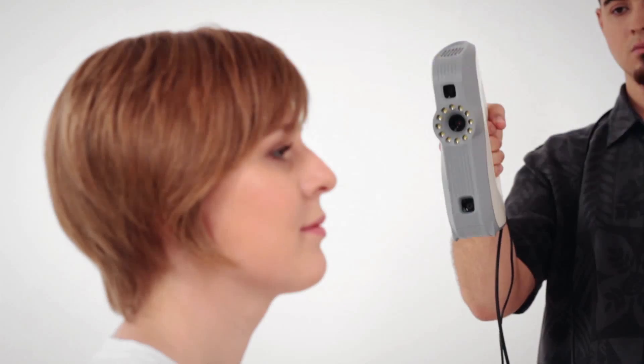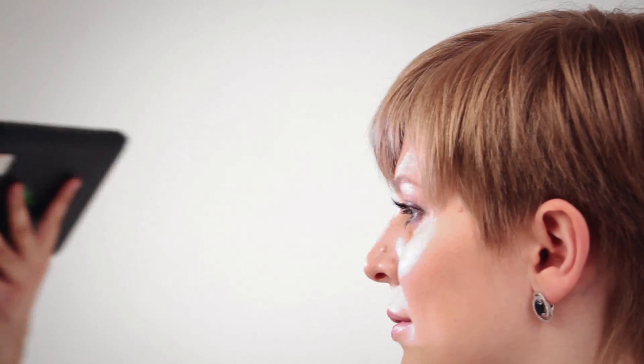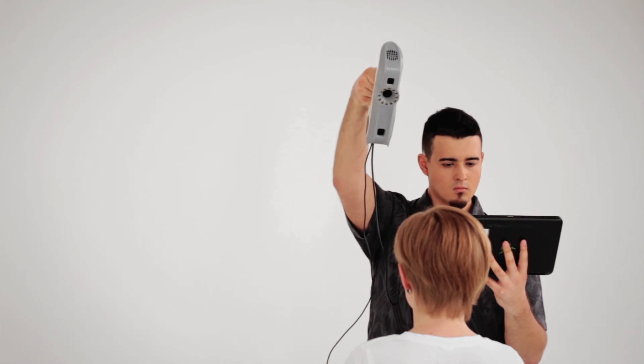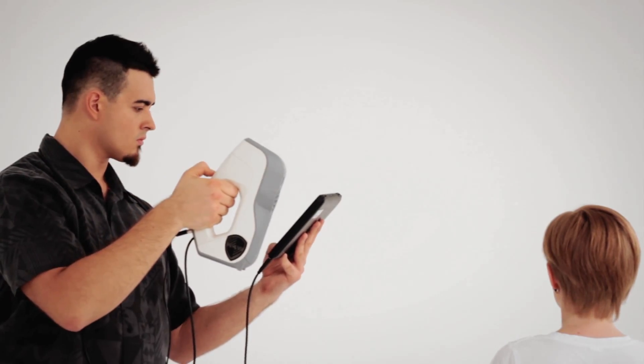The optimal trajectory for scanning the face quickly and effectively is as follows. Start scanning from the ear to the nose. Lower the scanner to capture the chin from below. Then raise it to scan the area above the forehead. Return the scanner to the nose level and finish scanning the face by moving it over to the second ear.